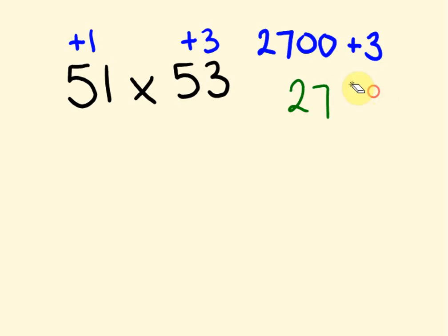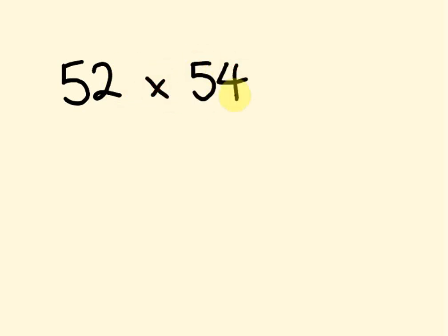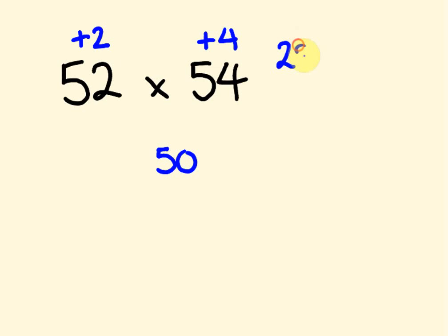Let's go through a couple more examples — and you might want to pause the video and give these a go. Let's do 52 times 54. We use base 50 again: this is 2 more than 50, this one is 4 more than 50. So 52 plus 4 is 56, giving 5,600. Divide by 2 to get 2,800. Then 4 times 2 is 8, and we add that on to get the answer 2,808.